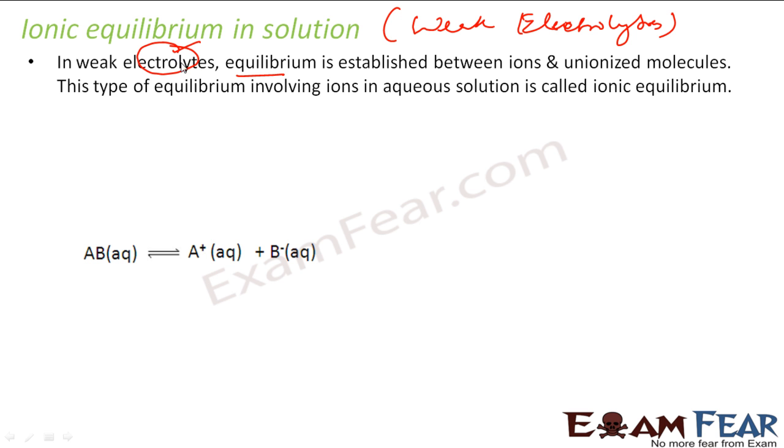So in weak electrolytes we have equilibrium between ions and unionized molecules. For example, I have this AB which becomes A+ and B-. These are two ions and unionized molecules. This type of equilibrium which involves ions in aqueous solution is called ionic equilibrium.